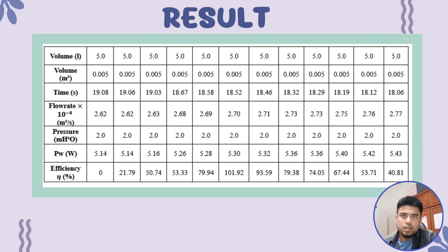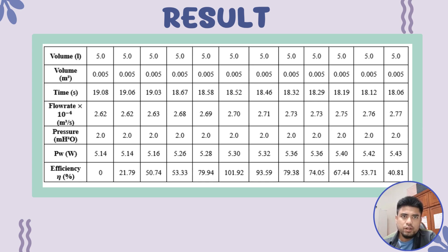After that, the water power in watts equals water density multiplied by gravity — 1000 multiplied by pressure head 2.0 multiplied by flow rate 2.62 × 10⁻⁴ — equal to 5.14 Watts. To get the final result, the efficiency value equals mechanical power 1.120 Watts divided by water power 5.14 Watts, equal to 21.79 percent.